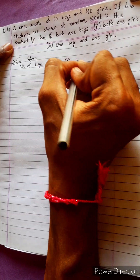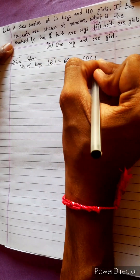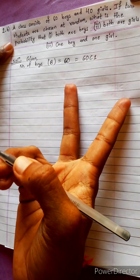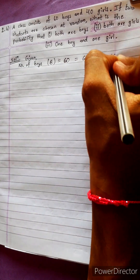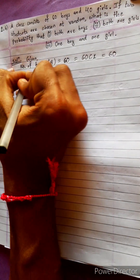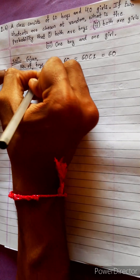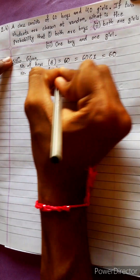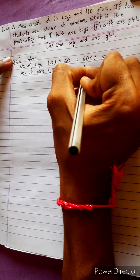If boys are chosen in one way, 60C1 is one way. And the number of girls equals to 40, so 40C1.